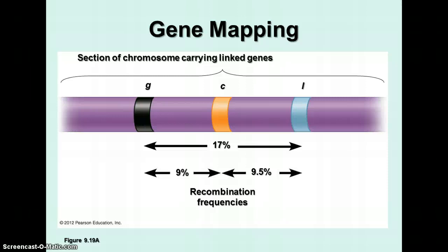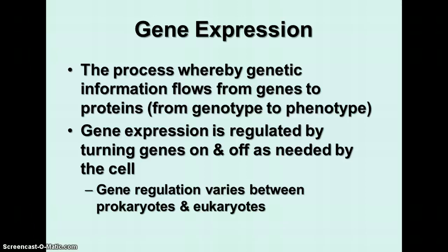Another thing we need to discuss is gene expression. The definition in your book is the process whereby genetic information flows from genes to proteins — that means from genotype to phenotype. Gene expression is regulated by turning genes on and off as needed by the cell. Not all cells need all genes to be expressed all the time, and the way this happens is different between prokaryotes and eukaryotes.